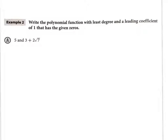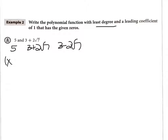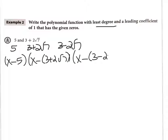Now we go backwards: write the polynomial of least degree with leading coefficient 1 for the given zeros. If 5 is a zero and 3 + 2√7 is a zero, don't forget that means 3 − 2√7 is also a zero by the conjugate theorem. Working backwards: 5 came from factor (x − 5), 3 + 2√7 from (x − (3 + 2√7)), and 3 − 2√7 from (x − (3 − 2√7)). Now we must multiply it all out.